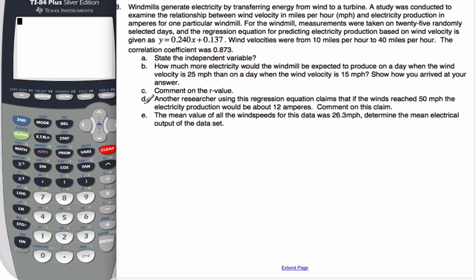In this example, take a moment and read this question carefully because it's quite wordy and the words are important to make sure we understand the context. We have windmills generate electricity by transferring energy from wind to a turbine. A study was conducted to examine the relationship between wind velocity and electricity production for one particular windmill. For the windmill, measurements were taken on 25 randomly selected days. The regression equation for predicting electricity output based upon wind velocity is given. Wind velocities were from 10 to 40 miles per hour. The correlation coefficient was this value here.